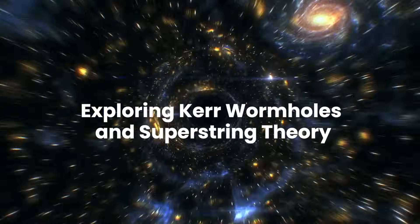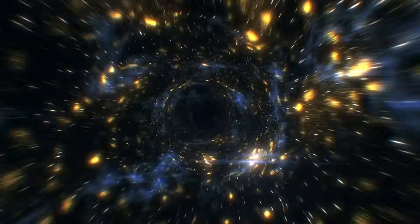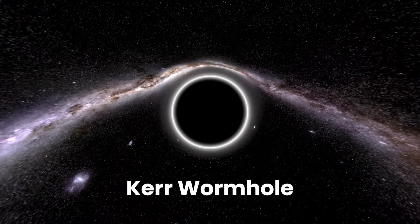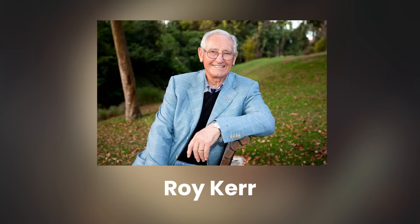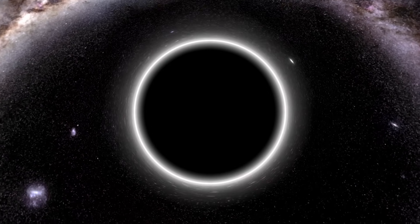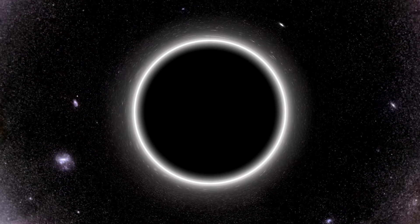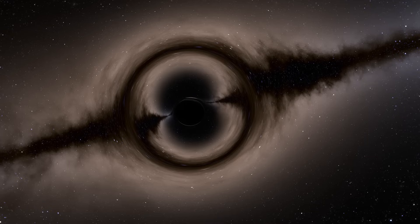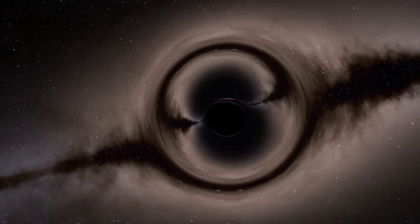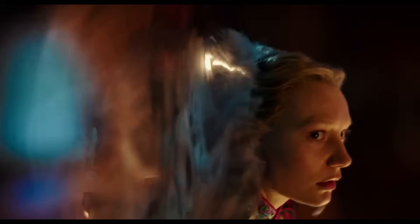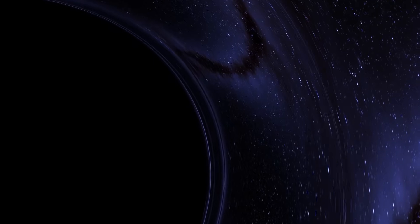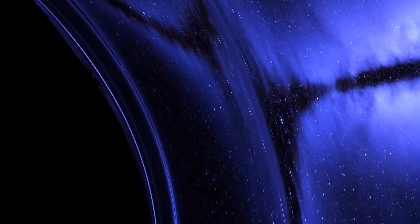Exploring Kerr wormholes and superstring theory. One of the most captivating concepts in the realm of theoretical physics is the Kerr wormhole, named after mathematician Roy Kerr, who proposed it using Einstein's equations of gravity. This hypothetical structure represents a tunnel through space-time, potentially connecting distant points such as different universes, or even different times within our universe. Visualized as a ring-shaped portal, akin to the looking-glass in Alice in Wonderland, traversing a Kerr wormhole could transport a traveler to a realm where the laws of physics might diverge from our familiar understanding.